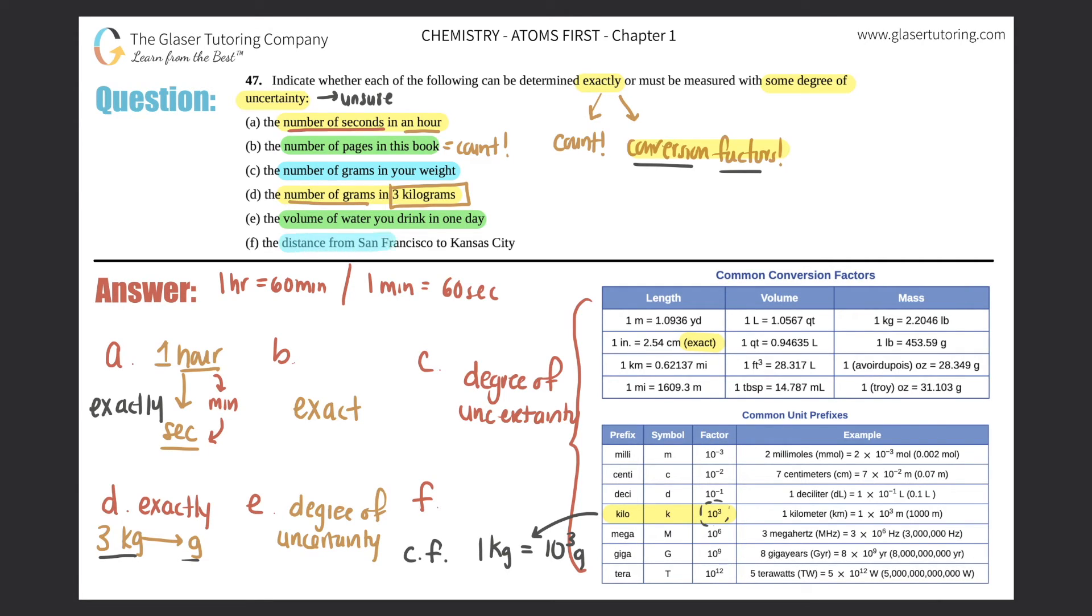And then finally, f, the distance from San Francisco to Kansas City. Can we count that, use a conversion factor, or are we unsure about that distance? Well, we definitely can't count it. I'm not even sure how far away San Fran is to Kansas City. Can't really use a conversion factor because they don't give me an exact number. That's the difference between d and f or d and e for that matter. With this one we can exactly know it because they gave us a number, but for f they're just saying the distance, so they're not giving us an exact number. So we can't really find an exact measurement or determination from that. F would have to be found also with a degree of uncertainty.